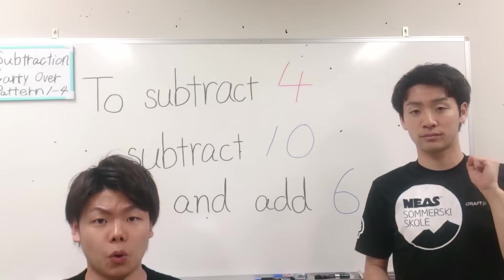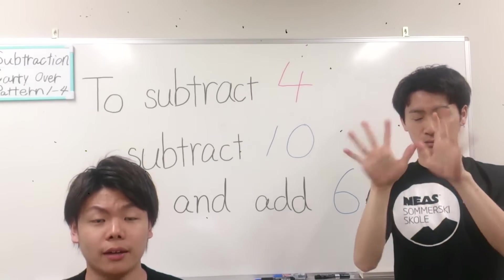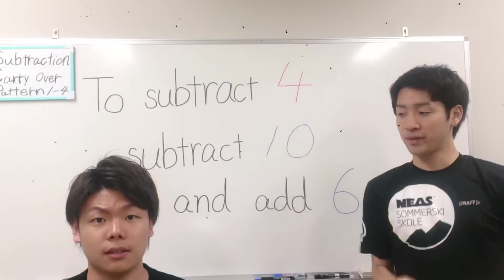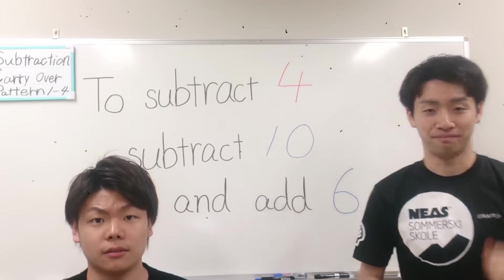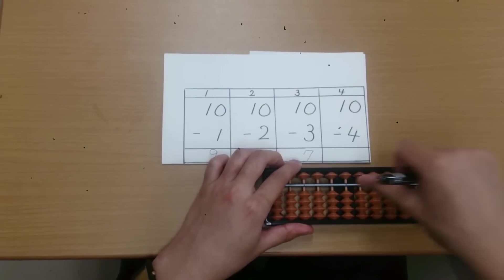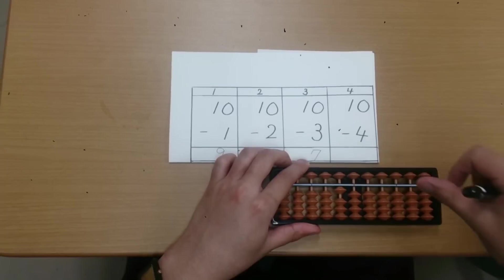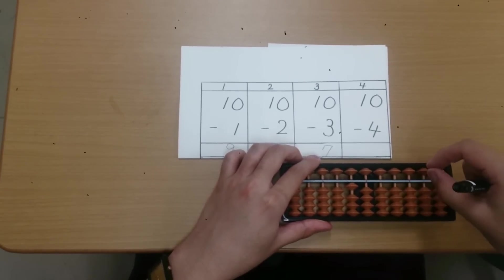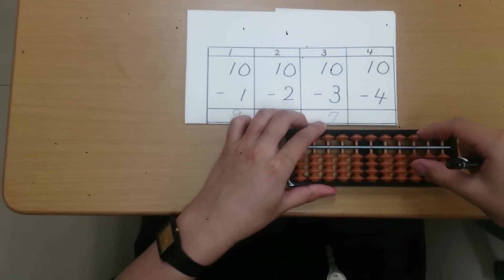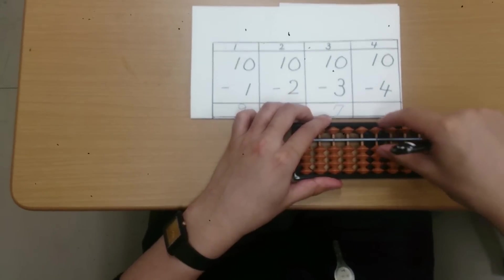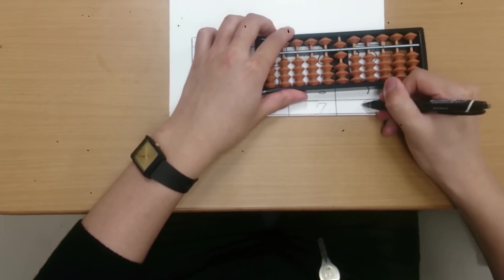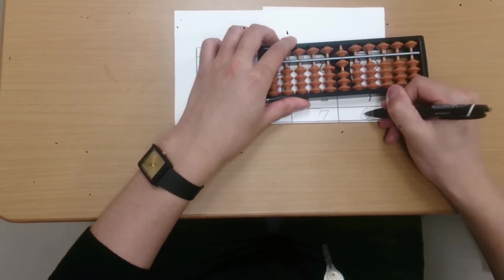Subtraction carryover pattern 4: subtract 4, subtract 10, and add 6. Let's check the VTR. Question number 4. Plus 10, minus 4. 2, subtract 4, subtract 10, and add 6. The answer is 6.